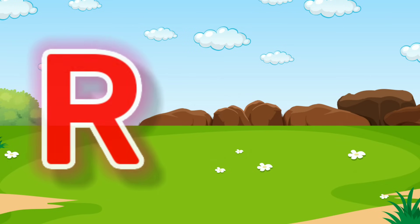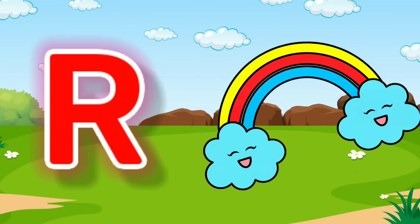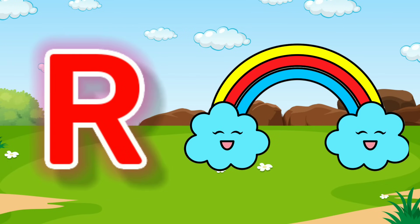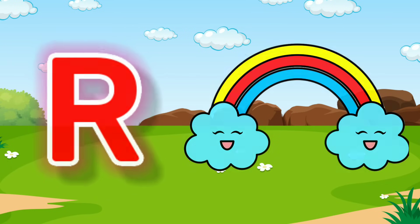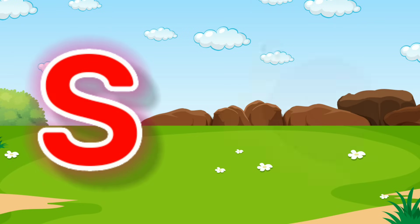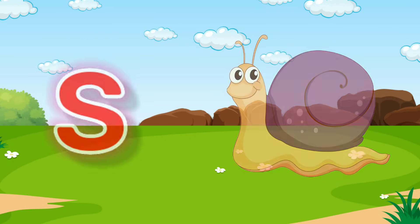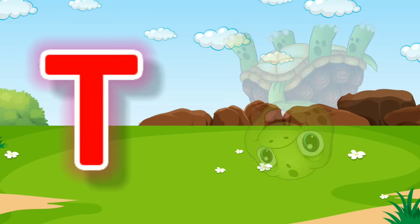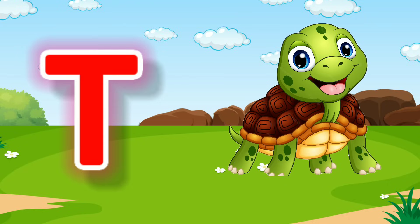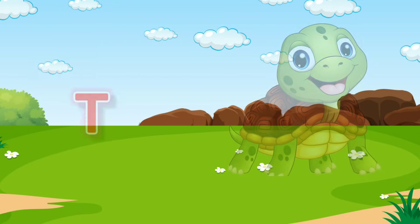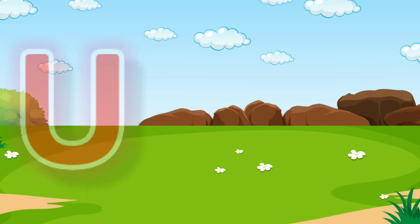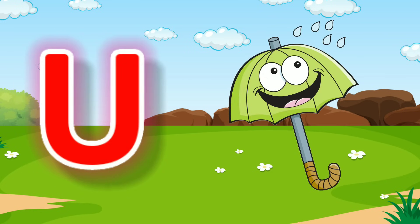R for Rainbow, S for Snail, T for Turtle, U for Umbrella.